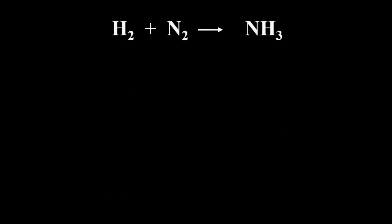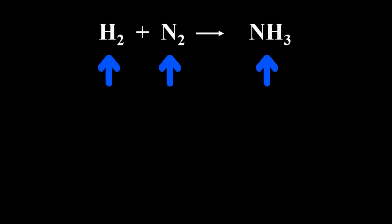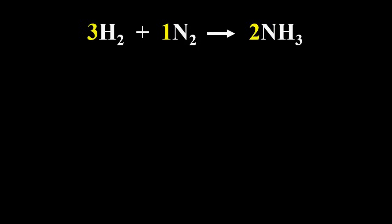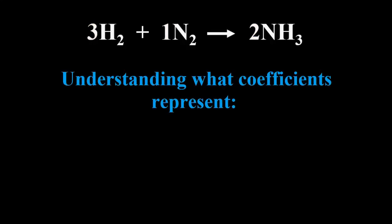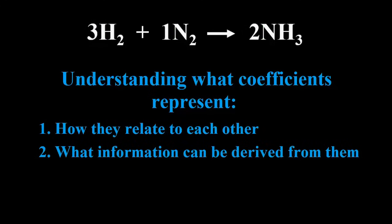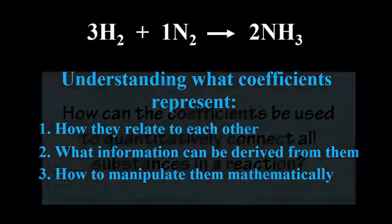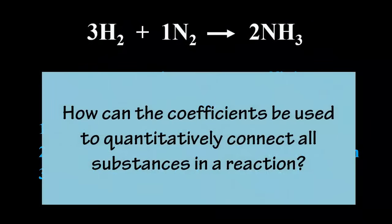Let's take a look at a fairly simple reaction: hydrogen reacting with nitrogen to produce ammonia. It is not balanced, so we'll have to add some coefficients. Mastering stoichiometry requires an understanding of what the coefficients represent, how they relate to each other, what information they can give us especially regarding molar amounts, and how to manipulate them mathematically — in other words, how can the coefficients be used to quantitatively connect all species in a reaction?